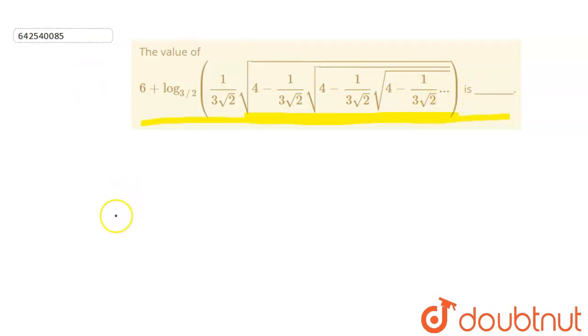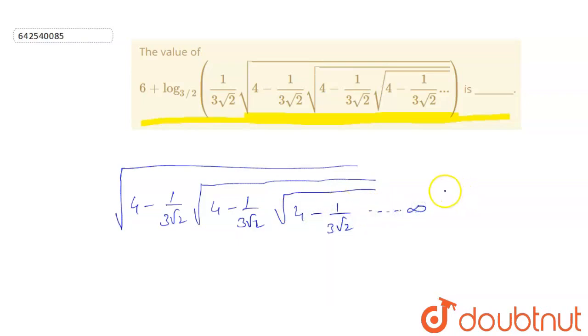Actually, this is written as like this: under root 4 minus 1 by 3 root 2, again under root 4 minus 1 by 3 root 2. Again, this is 4 minus 1 by 3 root 2, this till infinity.